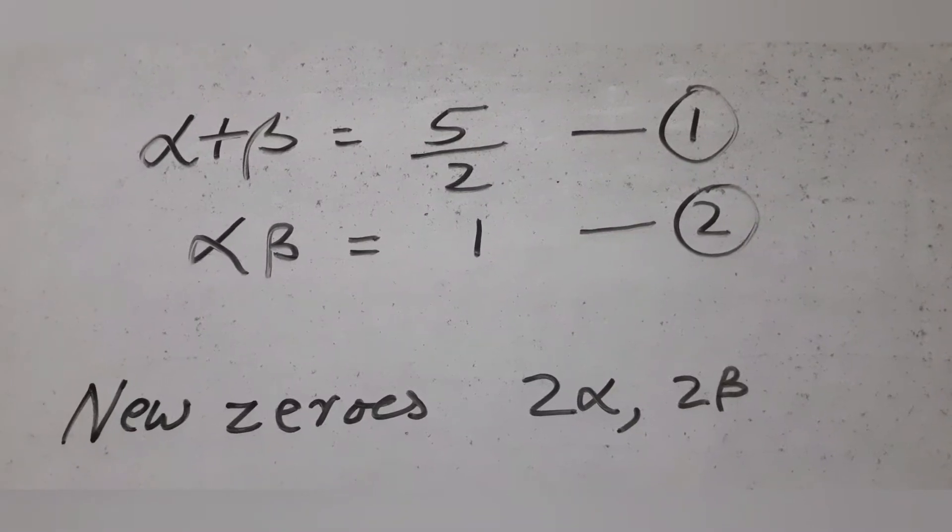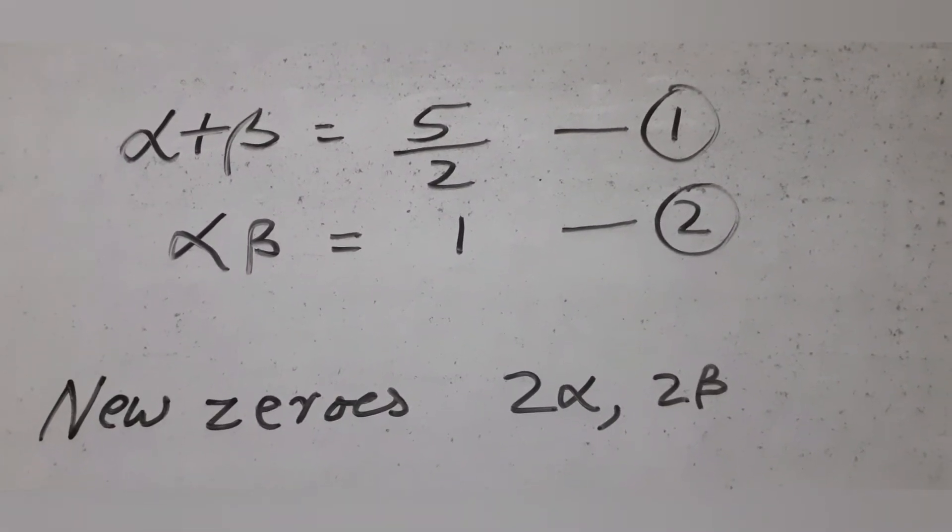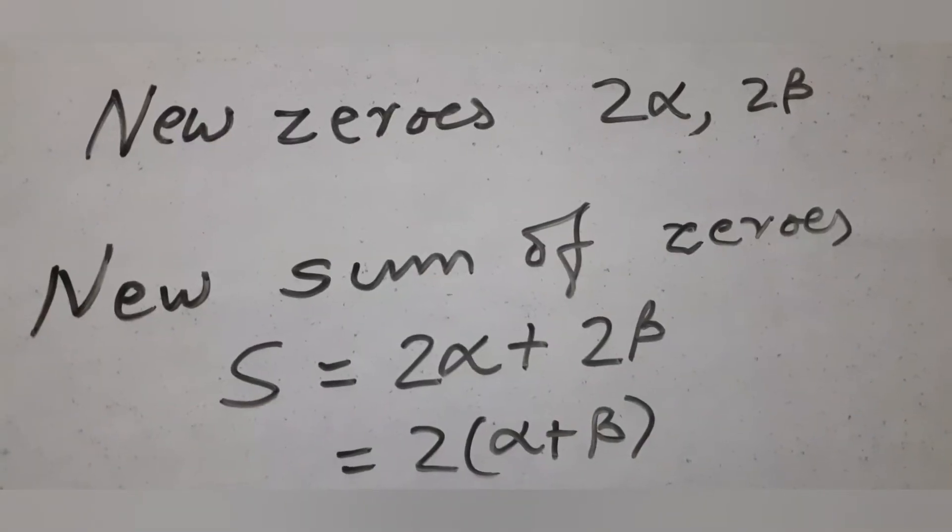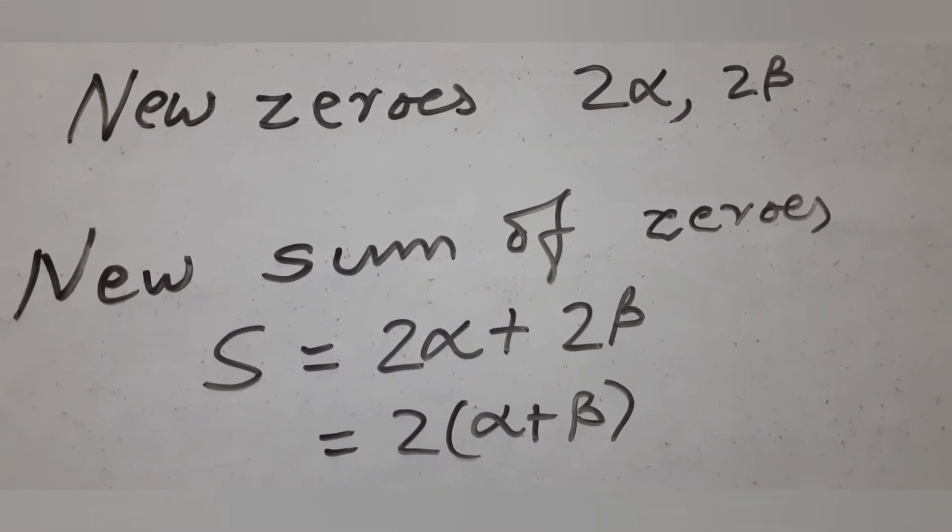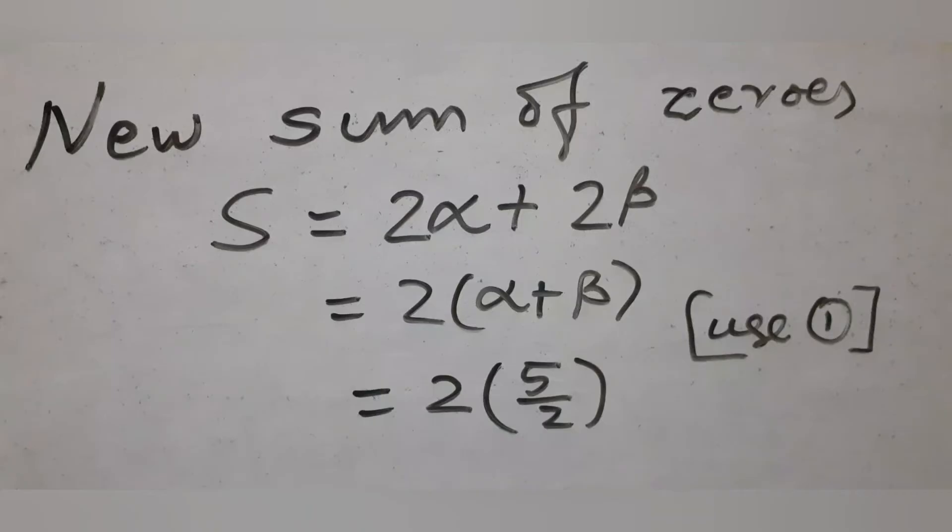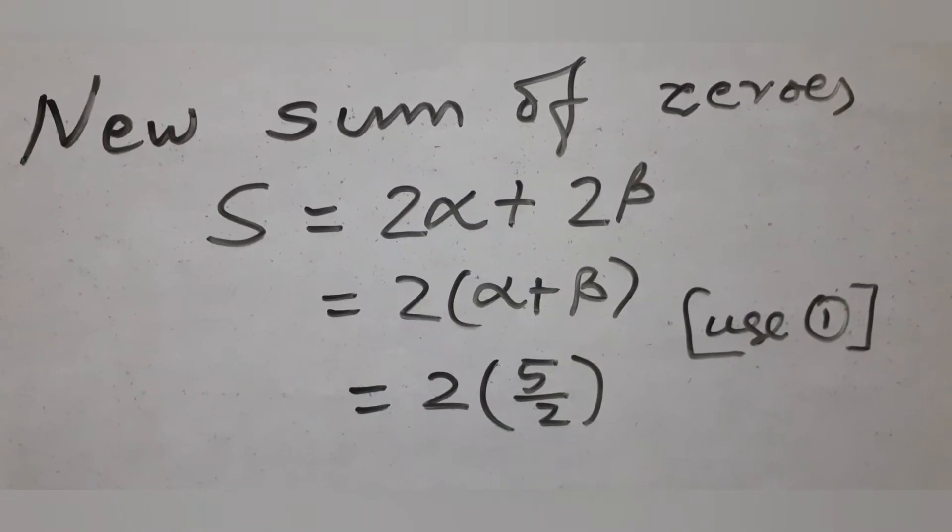Given that the new zeros are twice the zeros of the given polynomial, so new zeros are 2 alpha and 2 beta. Sum of the new set of zeros is 2 alpha plus 2 beta, so that 2 times alpha plus beta which gives you 2 into 5 by 2 or 5.